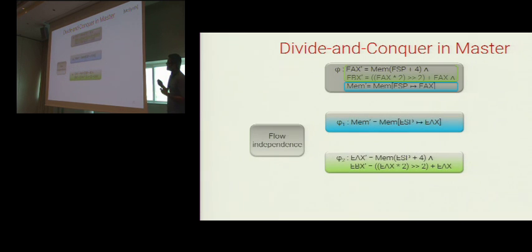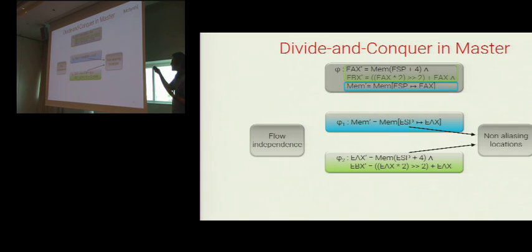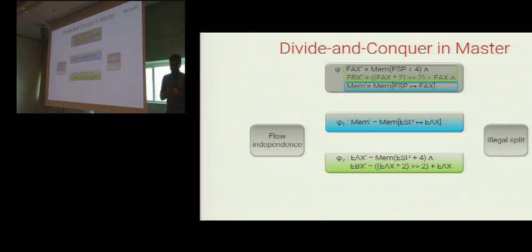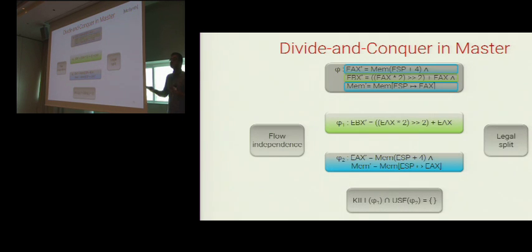Another possible way to split phi is as follows. This split is actually flow independent because the location updated by phi 1 can never alias with the location used by phi 2. But MixSynth treats memory as a single unit: because phi 1 modifies some memory location and phi 2 uses some memory location, MixSynth says this split is illegal and discards it. Finally, MixSynth determines that phi 1 and phi 2 is the only possible legal split of phi and hands those sub-formulas to slave synthesizers.